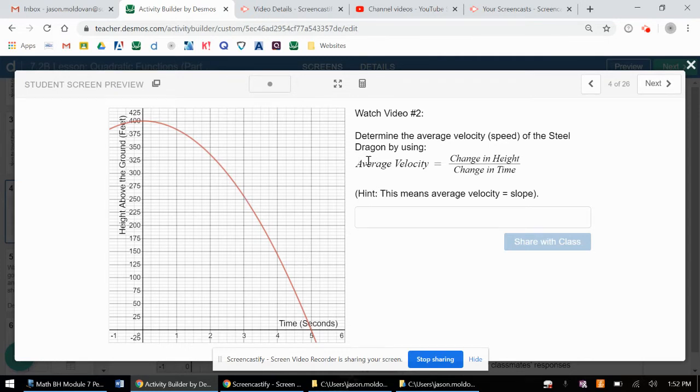But something that we can do is we can find the average speed or average velocity using slope, which essentially means we're going to imagine connecting these two points, zero comma 400 and five comma zero, with a line or a line segment.